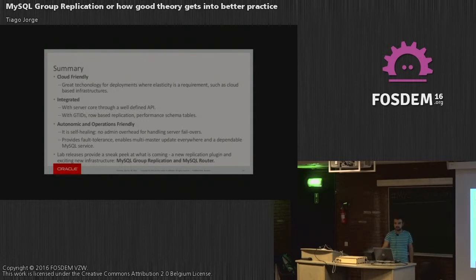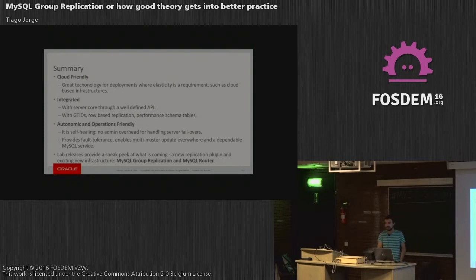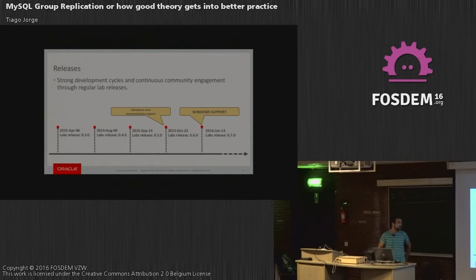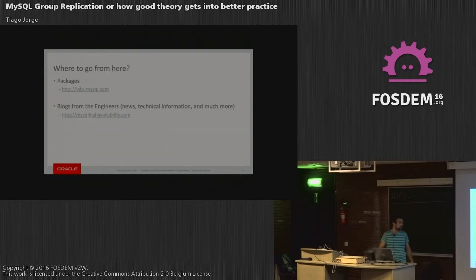We've been doing constant live releases every three months, so we'd like your feedback and your experiences. I'll be around the whole day and can take your notes and hear your thoughts. With the new MySQL infrastructure — group replication and MySQL Router — you can route clients to the correct nodes you want to write data to. The major two releases were quite a milestone because we had the new communication engine, which introduced more platform support, and in the last release we had Linux support. The packages are on labs, and we blog a lot about new releases.